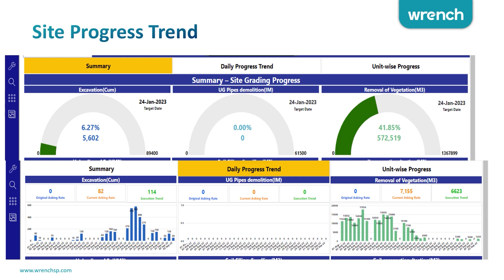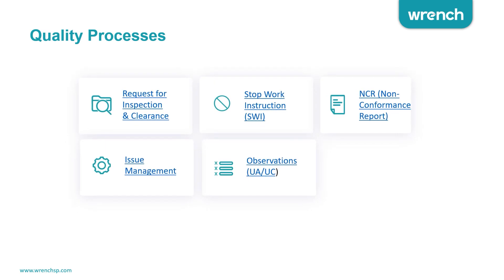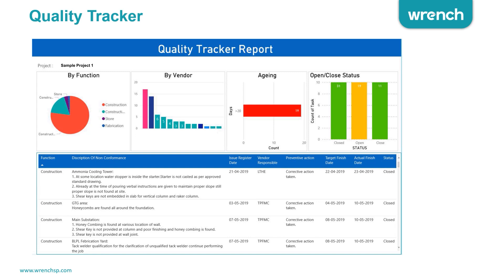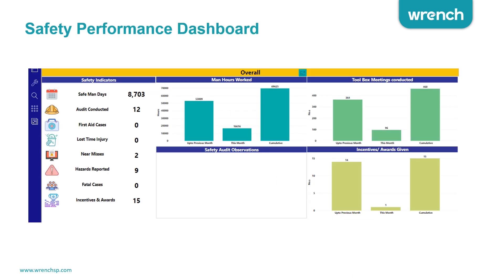The system provides site progress trends based on actual construction data, giving you commodity progress in terms of concreting, erection, and excavation. Quality processes such as request for information forms and stop work instructions can be captured on digital forms to produce dashboards. Safety processes like permit to work and incident reporting can also be captured from site on a mobile or web browser, and from that you can generate the safety dashboards you need.